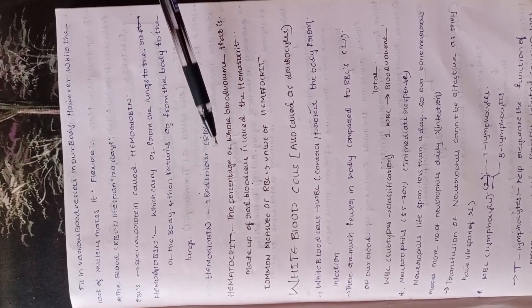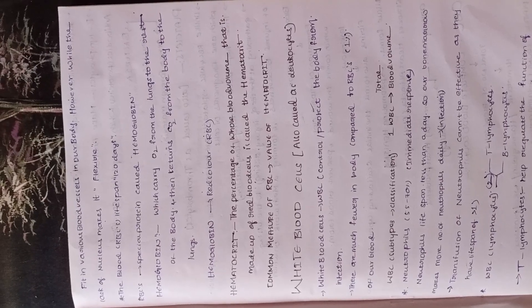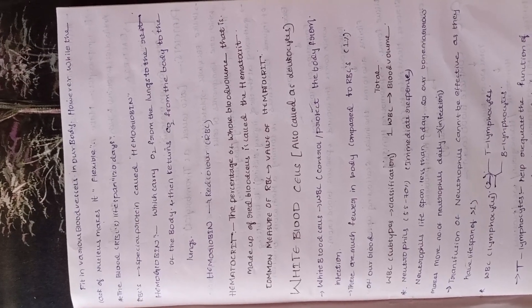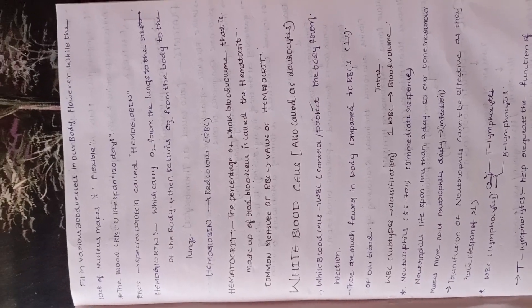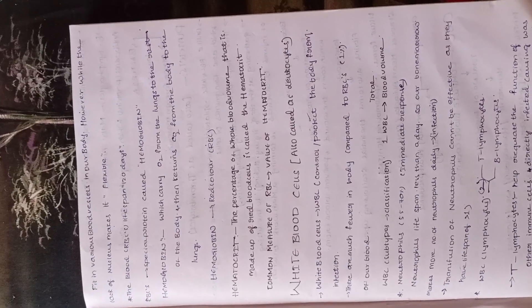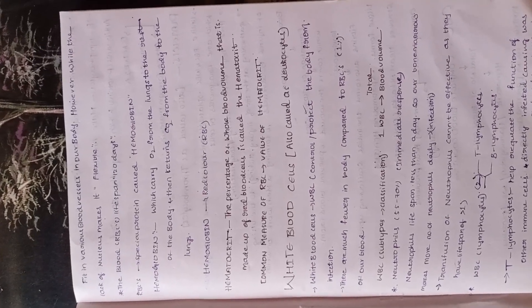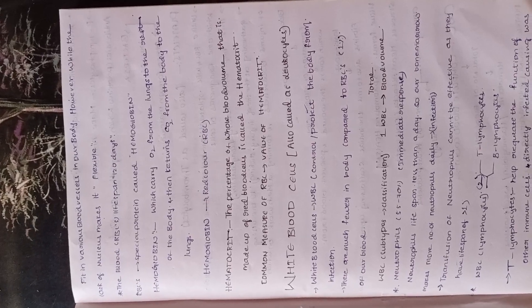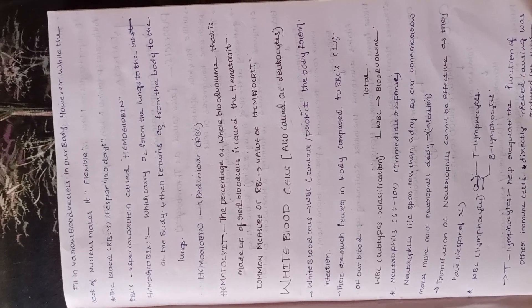Hematocrit is the percentage of whole blood volume that is made up of red blood cells. The common measure of RBC levels is hematocrit — remember this important term.